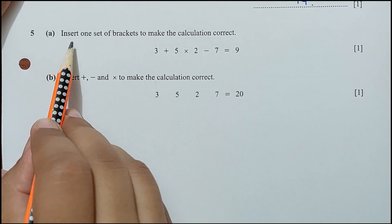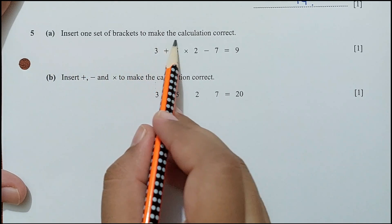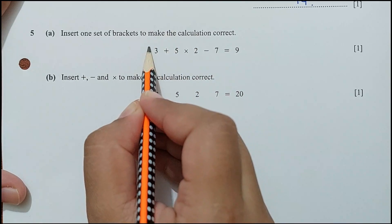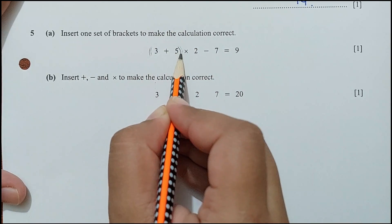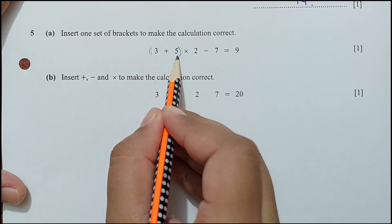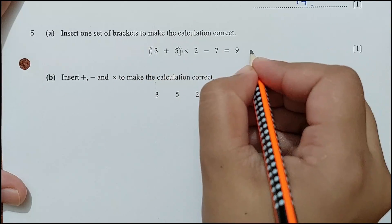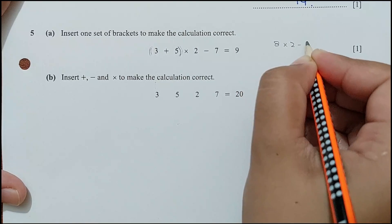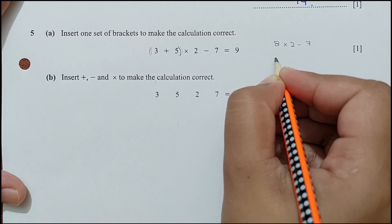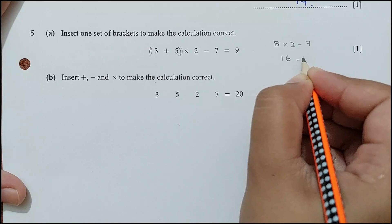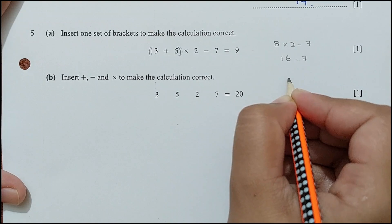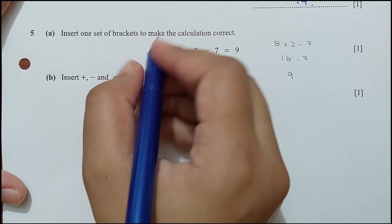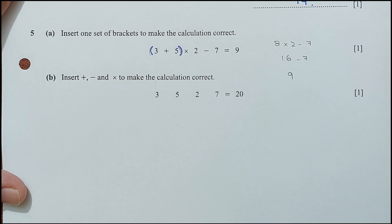Question 5 part A: insert one set of brackets to make the calculation correct. Placing brackets around the first two numbers: (3 + 3) + 5 × 2 − 7. So 3 + 3 is 6... checking: placing brackets on 3 and 5 gives (3 + 5) = 8, then 8 × 2 − 7 = 16 − 7 = 9. Yes, that's correct. The bracket goes around 3 + 5.